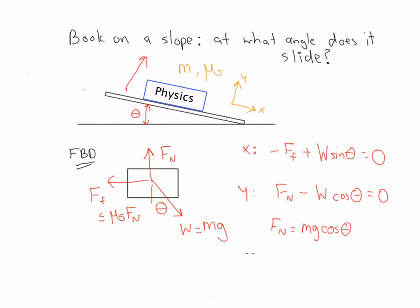What we know is that along the slope, at the maximum angle—so this is the angle where the force due to friction is at its absolute maximum magnitude—we know that minus mu sub s times the normal force, or minus mu sub s mg cosine theta, plus W sine theta, so plus mg sine theta, is equal to zero.